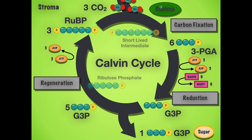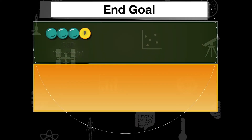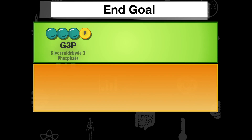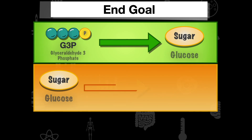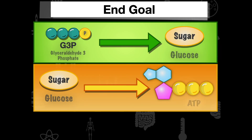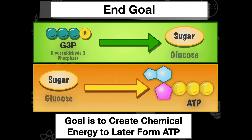The end goal is to take that G3P — glyceraldehyde-3-phosphate — and turn it into glucose. We then take that glucose to the mitochondria and turn it into ATP. So the goal is to go from G3P to glucose, store energy chemically in glucose, and later convert that glucose via cellular respiration in the mitochondria into ATP.